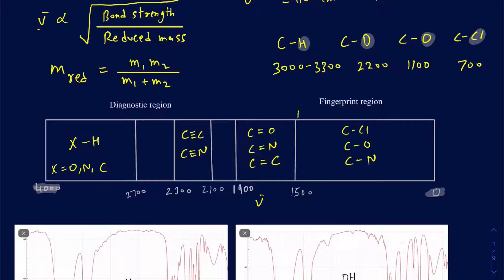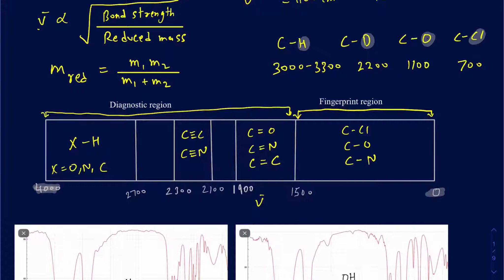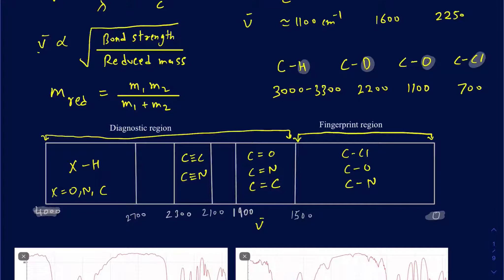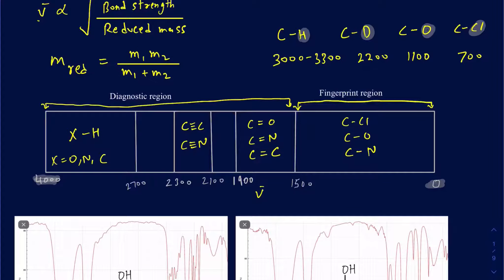Below 1,500 cm⁻¹ is considered the fingerprint region; anything above is the diagnostic region. You get more useful information from the diagnostic region because the fingerprint region has so many peaks it's hard to read. For the most part, focus on anything over 1,500 cm⁻¹ to identify functional groups. This lecture focuses on the diagnostic region, and there will be a separate video on the fingerprint region.